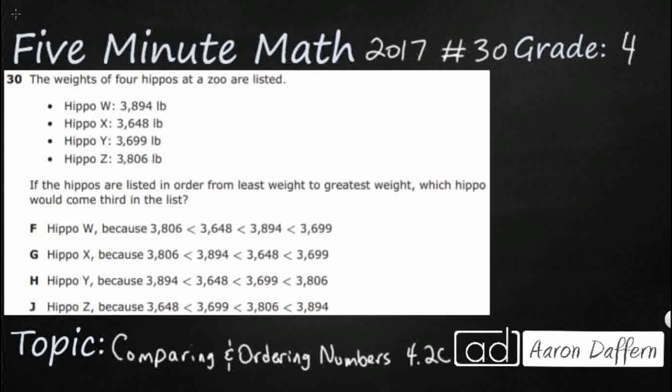So we've got four hippos here that are listed at the zoo: Hippo W, X, Y, and Z. They're all very similar in weight and we need to find them in order from least to greatest. We've got them listed with less-than signs and we're really looking for the one that would come third in the list. So we've got to find them from least to greatest and then figure out which hippo would come third.